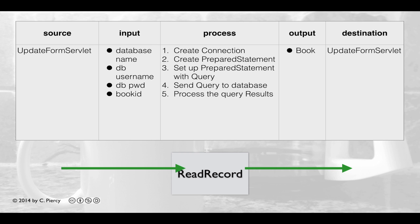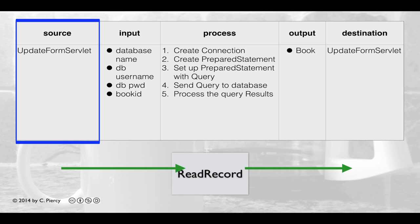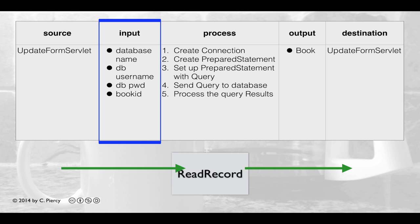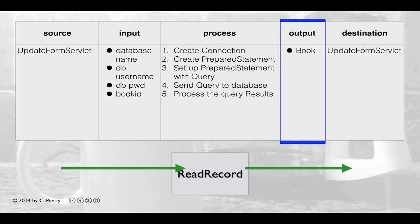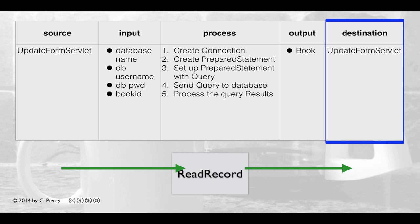Here's the IPO table for our Read Record query object. This will be called from the Update Form Servlet, which will pass along the database name, database username, database password, and the book ID. Read Record will create a connection, create a prepared statement, set up the prepared statement with the query and the book ID, send the query to the database, and get back the results. To process the results, it will create a Book object, which it sends back to the Update Form Servlet.